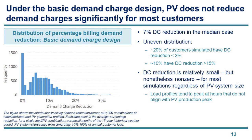Under the basic non-coincident demand charge design, solar isn't particularly effective at reducing demand charges. The figure shows the distribution of billing demand reduction across all 9,000 simulations, where the median billing demand reduction is about 7%. About 20% of the cases have a demand charge savings less than 2%, and about 10% of simulations have savings greater than 15%. This covers all combinations of load and PV simulation profiles over all months over the 17-year period. The main reason demand charge reductions are so small is that customer loads tend not to coincide well with PV generation.